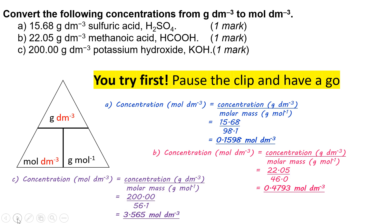And finally the C is 200 divided by this time 56.1. And this time around you get 3.565 per decimeter cubed.